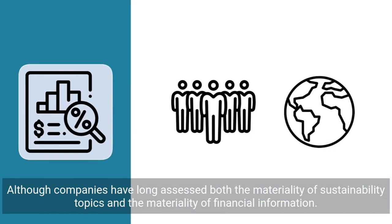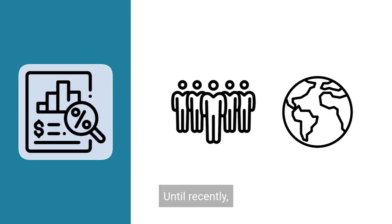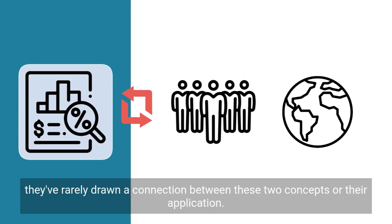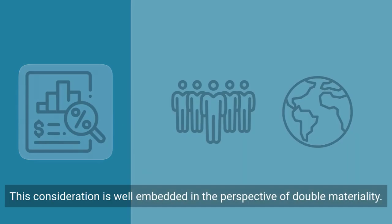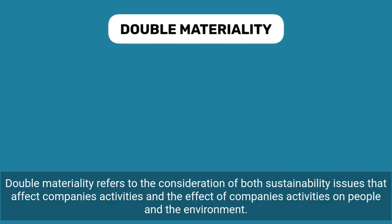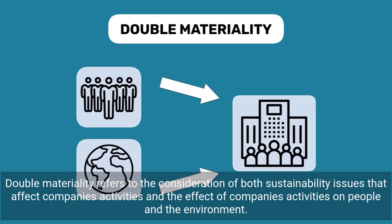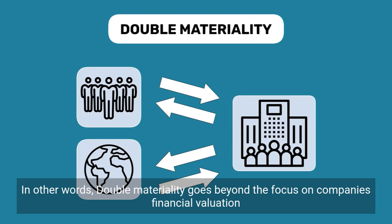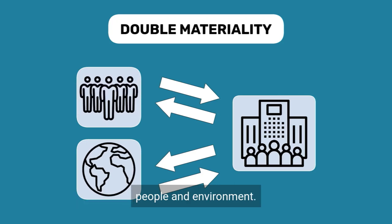Although companies have long assessed both the materiality of sustainability topics and the materiality of financial information, until recently they've rarely drawn a connection between these two concepts or their application. This consideration is well embedded in the perspective of double materiality. Double materiality refers to the consideration of both sustainability issues that affect companies' activities and the effect of companies' activities on people and the environment. In other words, double materiality goes beyond the focus on companies' financial valuation and looks at the impact the company has on its surroundings, its people, and environment.